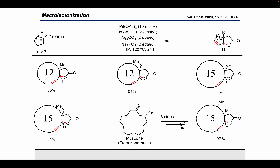Macrolactonization, which is considered a challenging reaction in traditional methods, is also now possible using this same protocol. As you can see, 12-membered ring-containing acids or even 15-membered ring-containing acids — some of which could be prepared from a natural product like muscone — could also be cyclized using the same strategy.